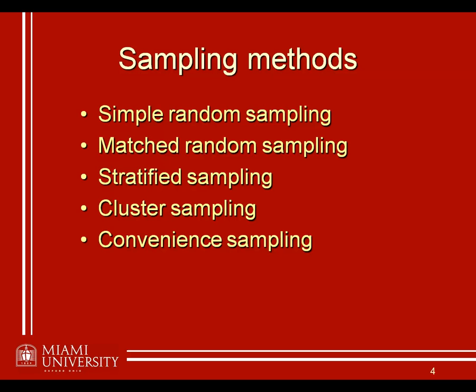Now those first four methods are what are referred to as probability sampling methods. That means even if it's not specifically random, you can identify the specific probability with which each individual respondent is likely to receive your survey, or with which each person in your population is likely to become part of your sample. There are other methods called non-probability sampling methods, where you can't specify that.